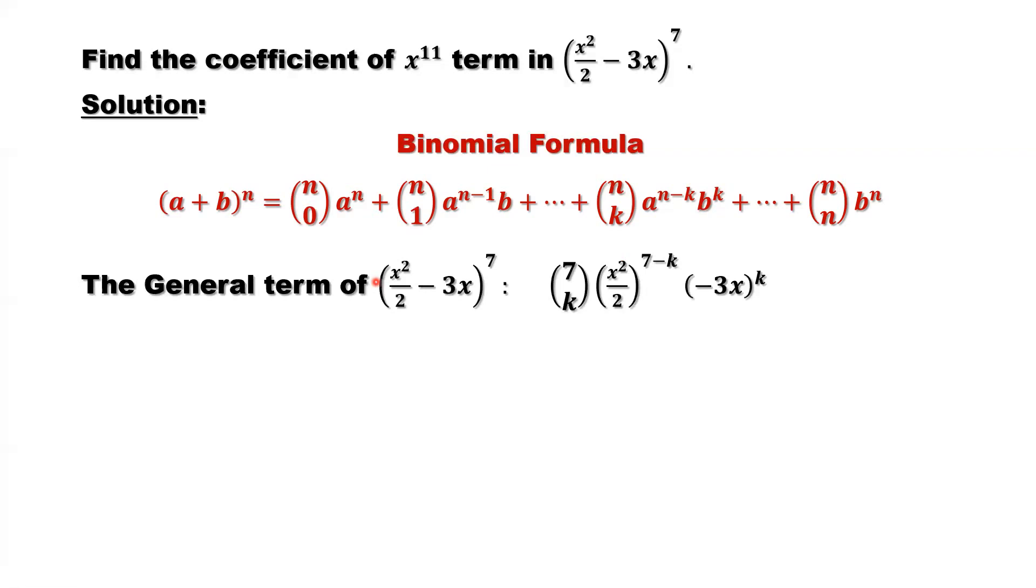Our question is to find the constants in front of x^11 term from the general term of this expression. We know that nCk, in our case n is 7, a is x squared over 2 to the power 7 minus k, and b is negative 3x to the power k. This is the general term.